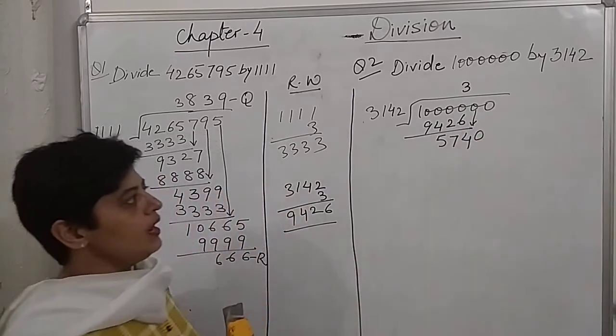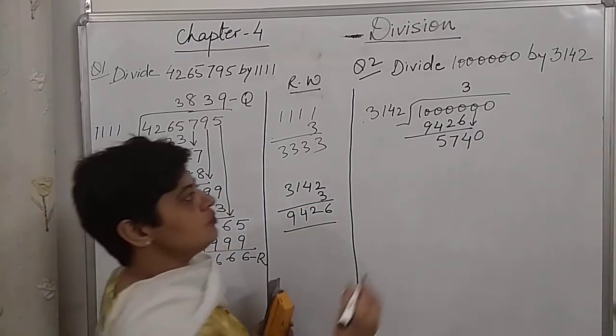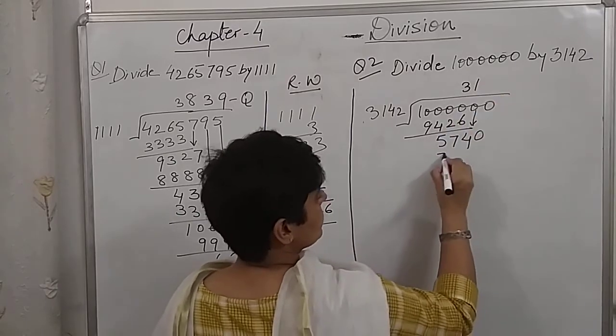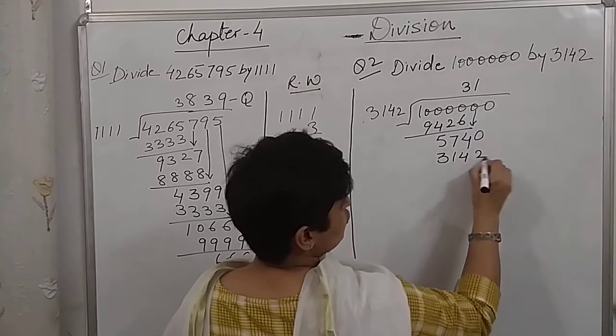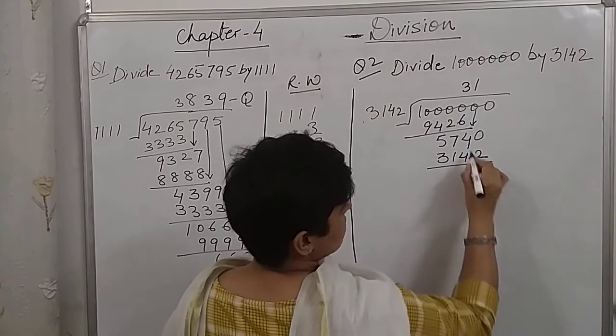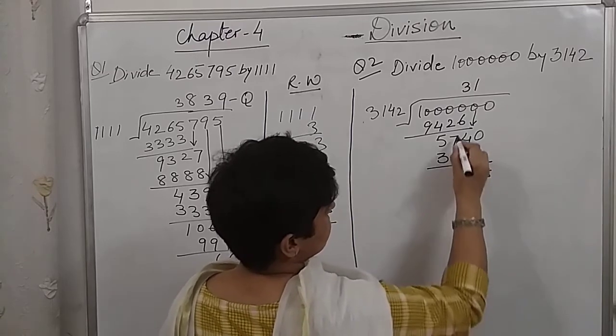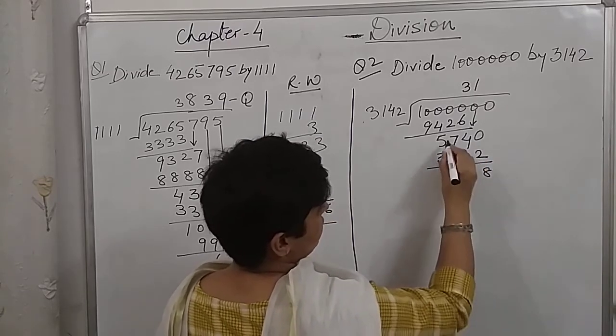So, the 0 will come down and this will go with 1. 3, 1, 4, 2. 13 minus 4 gives 9. 6 minus 1 gives 5. And 2.